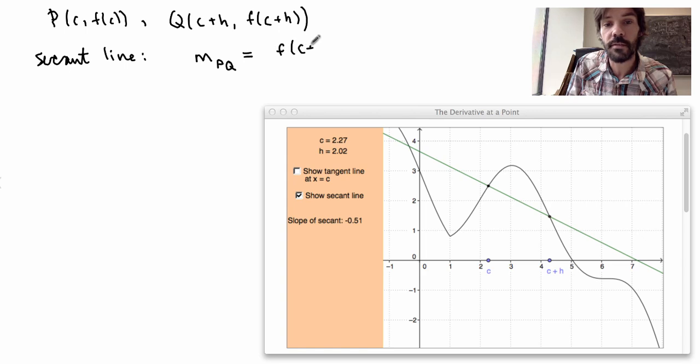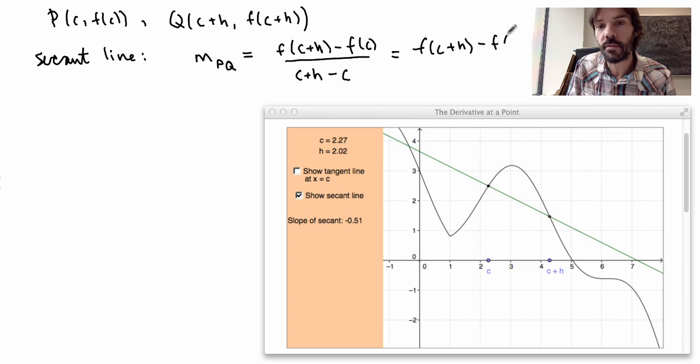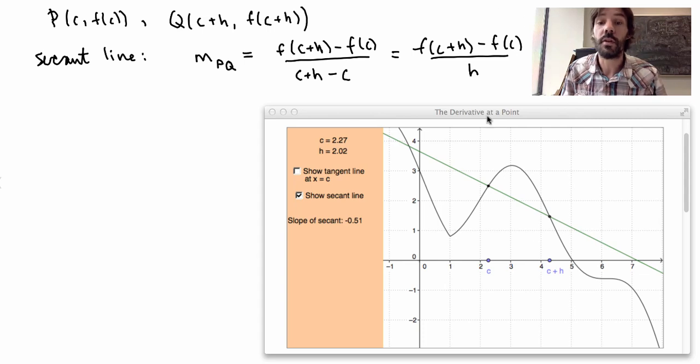So the y-coordinates gives me f(c+h) minus f(c) and the x-coordinates gives me c plus h minus c. So in other words I just get f(c+h) minus f(c) divided by h. This is the slope of the secant line going through these two points.